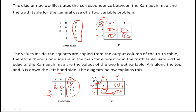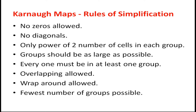Remember how we put the output values from the truth table into a K-map representation for a 2-variable problem. This is just a general example for representing the K-map and the truth table for 2 variables. Now let us first understand the K-map rules of simplification. These rules are going to be applied whenever we are trying to minimize the Boolean expression.